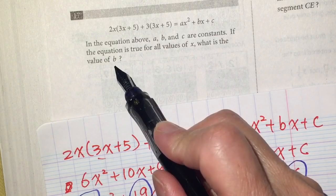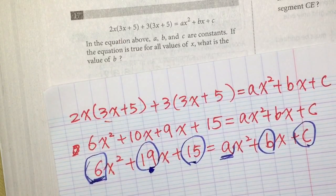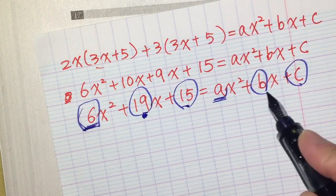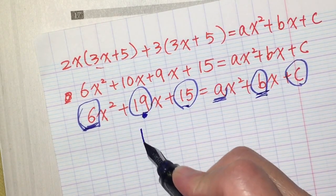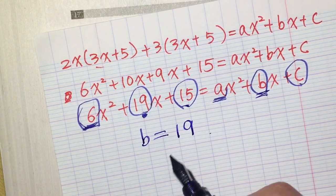And the question only asks us about the value b. Right? You can see it's b. Hello, it's b. Not you, it's b. Not me, it's b. So we only need to figure out the b. So b is 19.